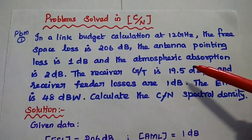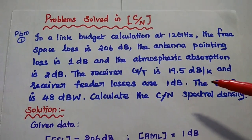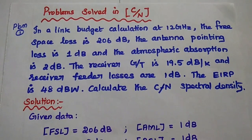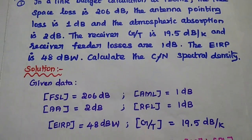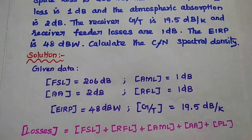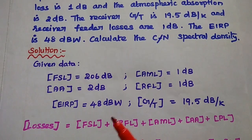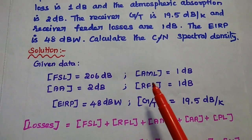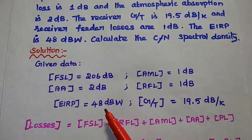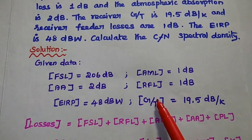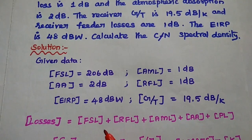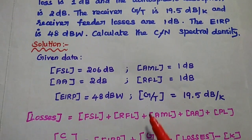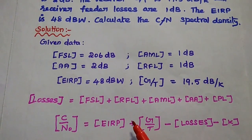Here all the losses are given, G/T ratio is given, and the EIRP value is given, so we are going to find out the carrier-to-noise ratio. In the solution, first we write the given data: free space loss is 206 dB, antenna pointing loss (antenna misalignment loss) is 1 dB, atmospheric absorption is 2 dB, receiver feeder loss is 1 dB, EIRP (equivalent isotropic radiated power) is 48 dB Watt, and G/T ratio is 19.5 dB/K.